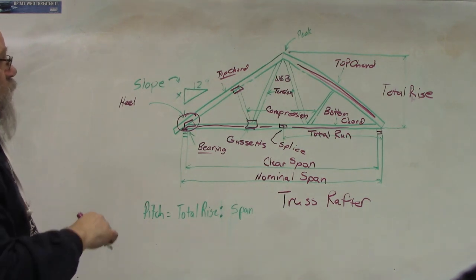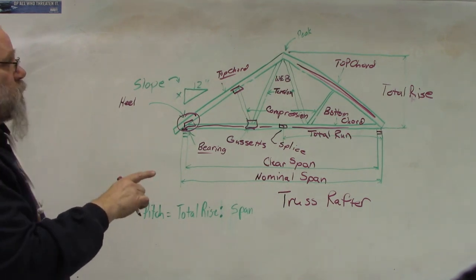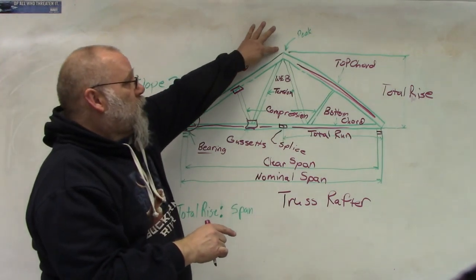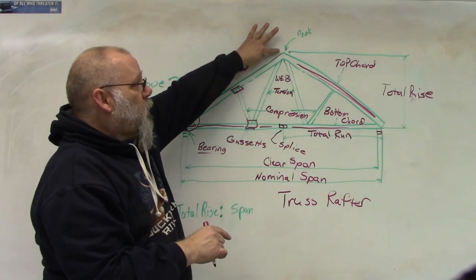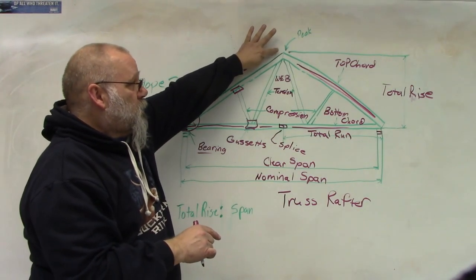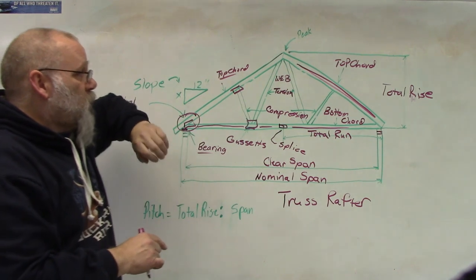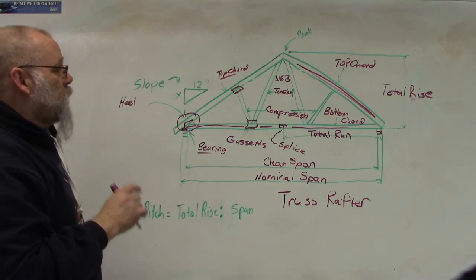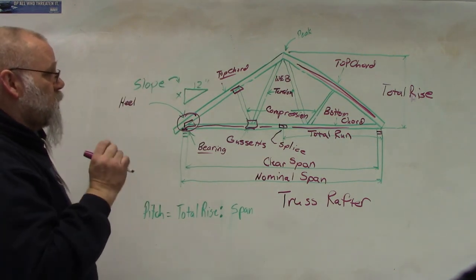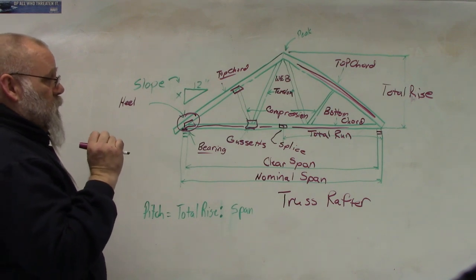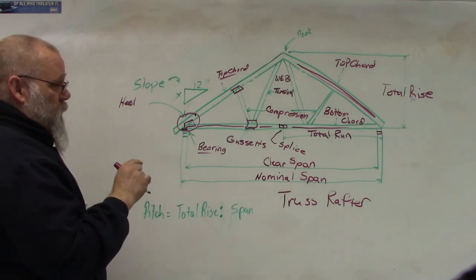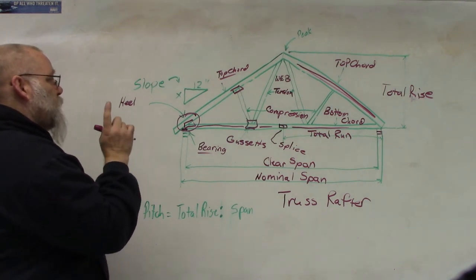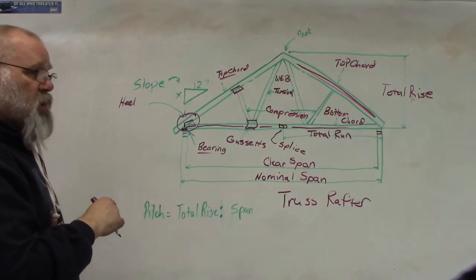So those are the terms. This one up here I didn't cover yet — that's the peak, the very point where the two top cords come together. That's the terms that go along with this truss rafter. Now, as long as I'm on rafters, let's talk about slope and pitch.